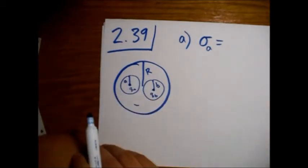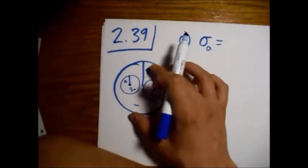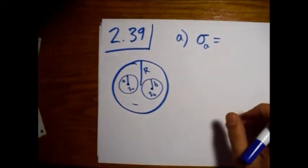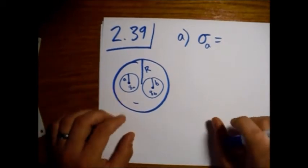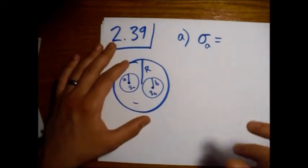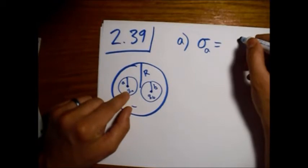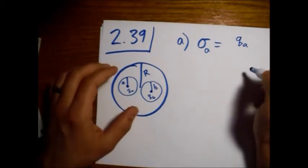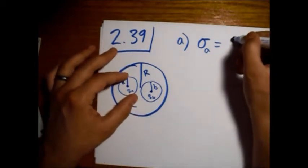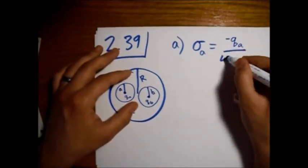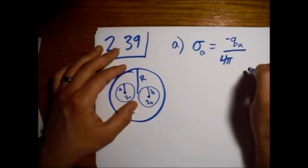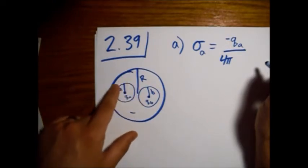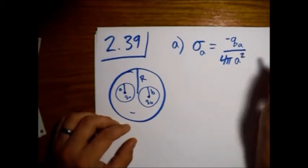And if there's any field, which there is from this point charge, the charges inside the conductor will move to cancel it, because the electric field inside the conductor is going to be zero. The surface charge density is going to be opposite to cancel it out, so sigma A equals negative QA over 4 pi A squared.